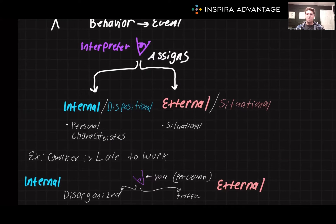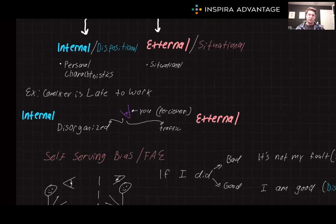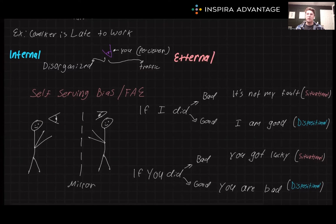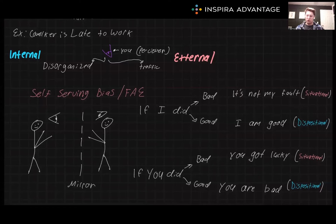Attribution theory also addresses biases in how we interpret behaviors. The fundamental attribution error, for example, is our tendency to overemphasize internal factors and underplay external ones when evaluating others' behavior. Conversely, the self-serving bias is when we attribute our successes to internal factors and our failures to external factors. Cultural factors also influence these biases, with individuals from individualist cultures like America more prone to these errors than those from collectivist cultures like China.